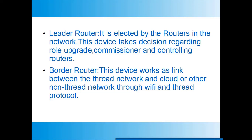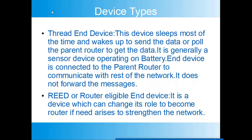Next comes the Border Router. This device works as a link between the Thread network and the cloud or another Thread network. It can use Wi-Fi and communicates with Thread devices in the Thread network. Then comes the Thread End Device. This device sleeps most of the time and wakes up to send data or poll the parent router to get data. It is generally a sensor device operating on a battery.